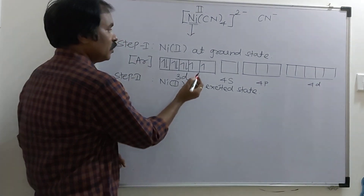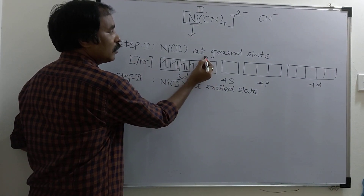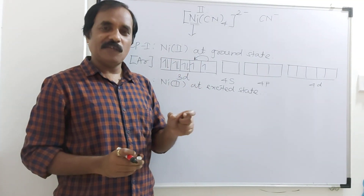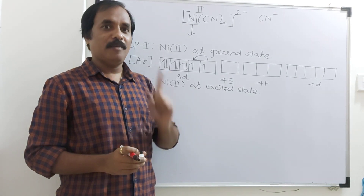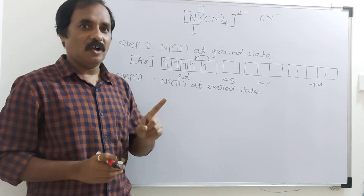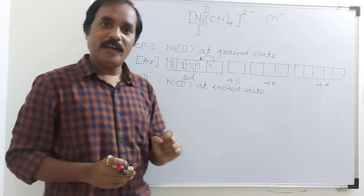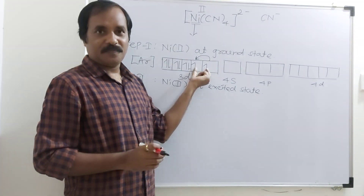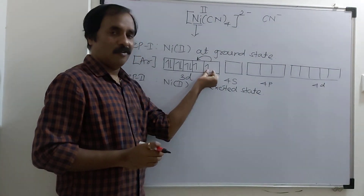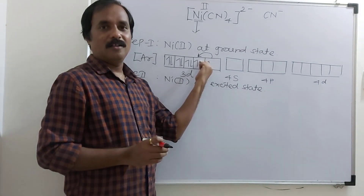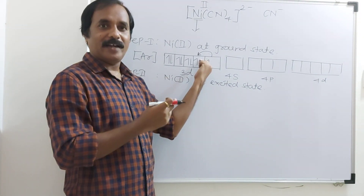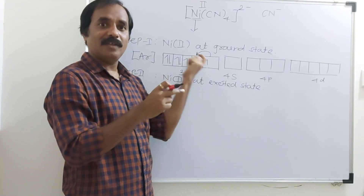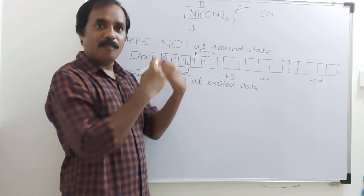So what happens? Shifting of this unpaired electron into another atomic orbital. What is the condition for inner pairing? At least one empty atomic orbital or hole is required. A hole is an atomic orbital with a single electron. Here two holes are present. So shifting of this electron into that atomic orbital — this is known as inner pairing of electrons, inner shifting of electrons, or excitation of electrons.